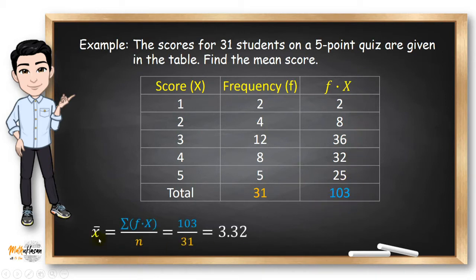So using the formula, x̄ now is just equal to 103, which is the total of the f times x column, and 31, which is the total frequency. So the sample mean for this distribution is 3.32. And we can now say that the average score of 31 students is 3.32.